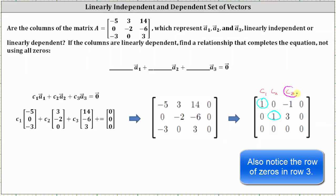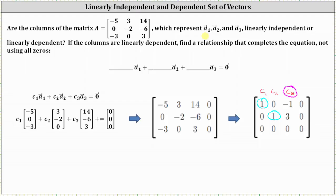So because we have a free variable, we know we have an infinite number of solutions, and therefore we have more than the trivial solution, and therefore the columns of the matrix or the vectors are linearly dependent. And let's go ahead and write that down.